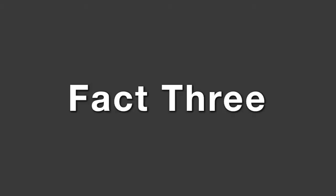It was created as a symbol of unity and national identity for Aboriginal people during the land rights movement in the early 1970s. The symbolic meaning of the flag colours: black represents the Aboriginal skin colour, the yellow circle represents the sun, and red represents the sand and the land of Australia.